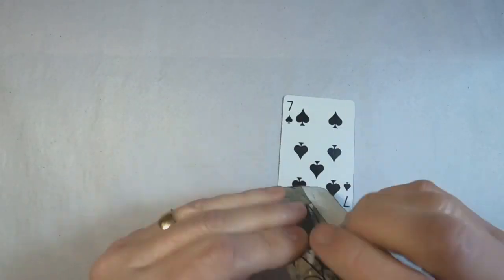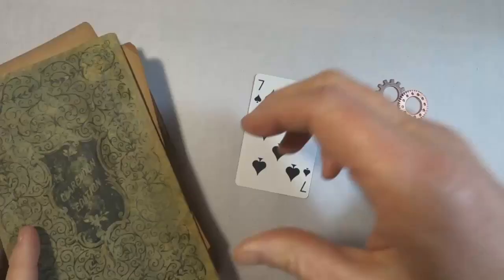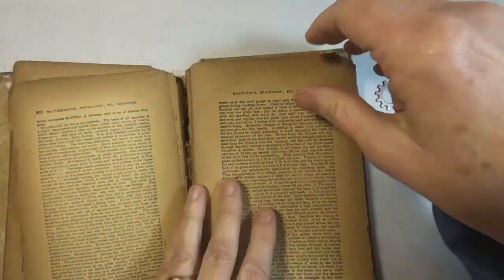So this is a seven of spades, and this is the card that we are going to redo.